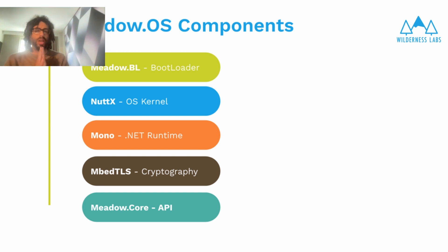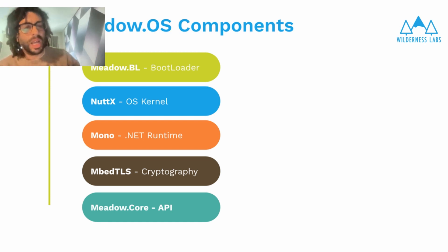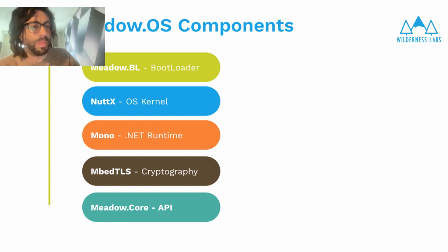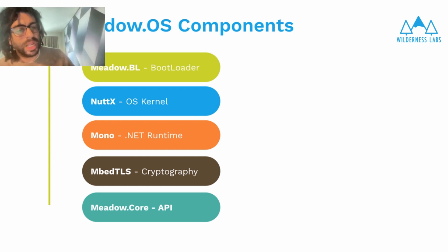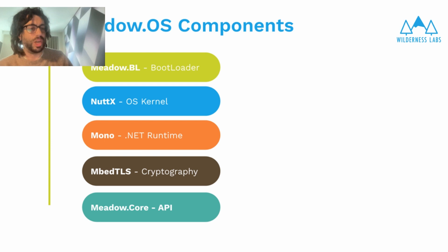We've done a lot of work and there's a lot of custom code in MetaOS, but we have used as our basis industry standard open source components for providing the services a full Internet of Things solution needs. Our main components are MetalBL, a custom-made bootloader; Nadex, an open source real-time OS kernel; Mono, an open source .NET runtime engine; EmbedTLS, a modern cryptography library; and MetalCore, our layer between the native operating system and the C-Sharp app world that we present to you to create your solution in.